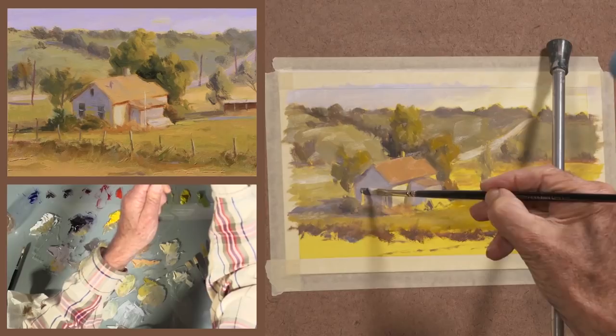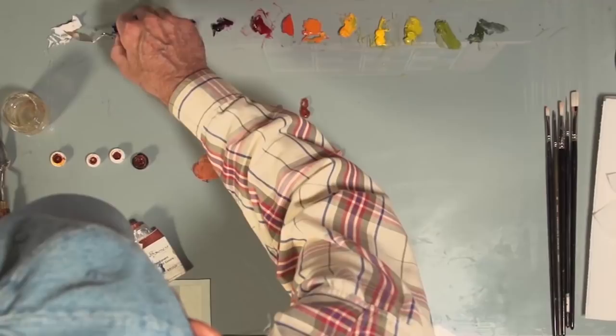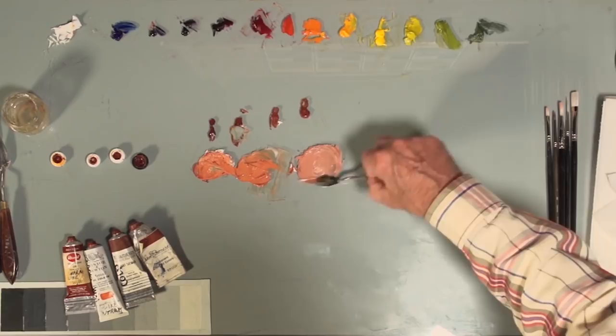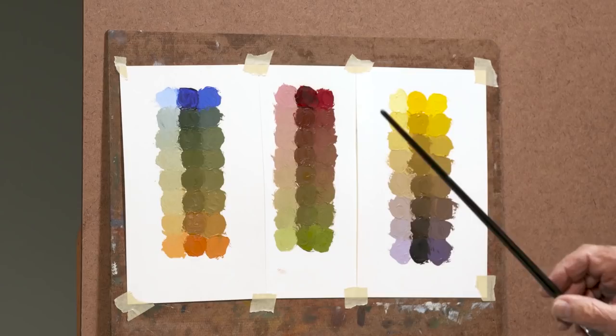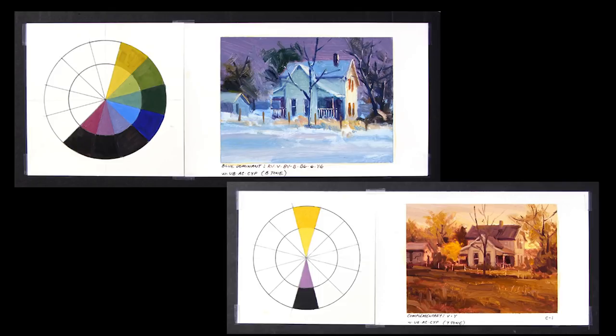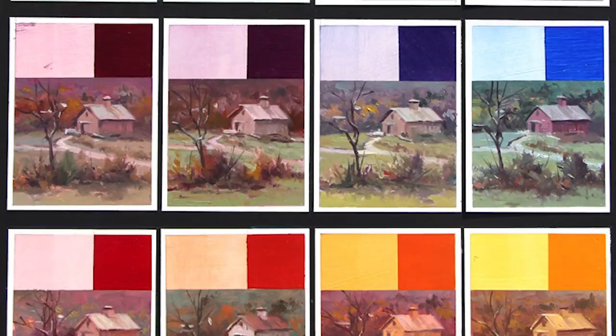Let John be your guide as he shows you how to mix pure, clean color, modify color, and expand your color options nearly to infinity by using just three primary colors plus white. He'll take you even further by showing you the same scene using multiple color wheels and palettes so you can see for yourself how the primary colors you choose can completely change the look of the painting.